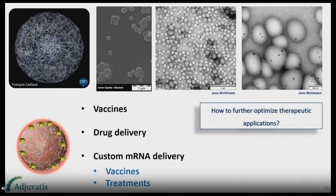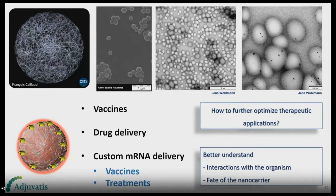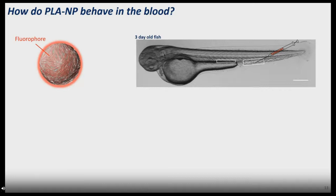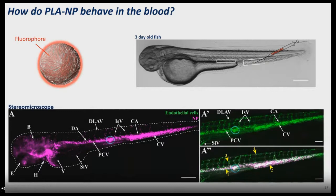The main question was: how do they behave in the blood when injected? We added red fluorescent nanoparticles — or other colors — and injected them into the circulation of baby zebrafish, then used live imaging to see where the nanoparticles go. The first thing we did was image with a stereomicroscope. You can see the nanoparticles in magenta, and the endothelial cells in green because this transgenic fish expresses GFP in all endothelial cells.